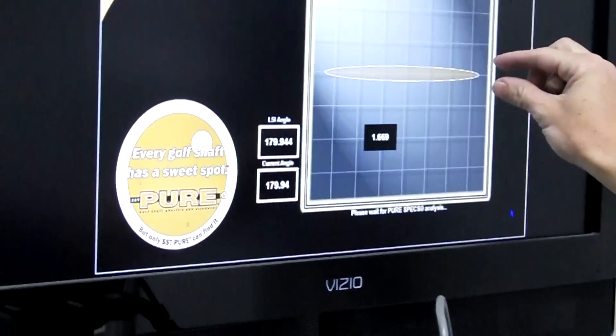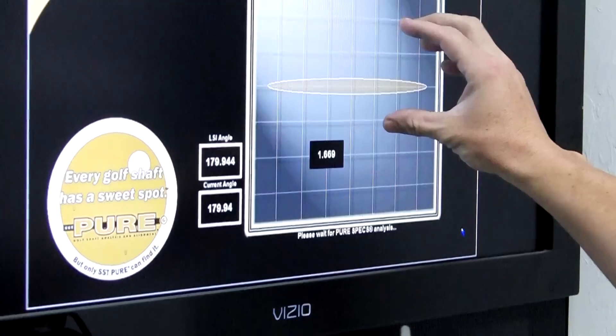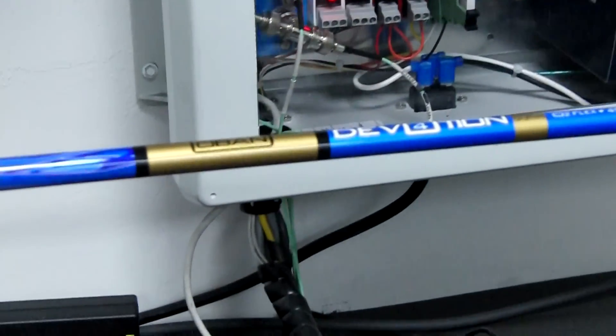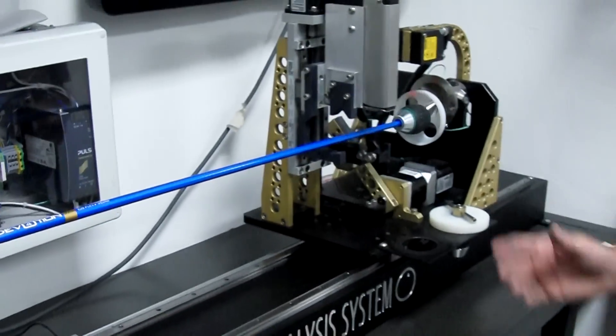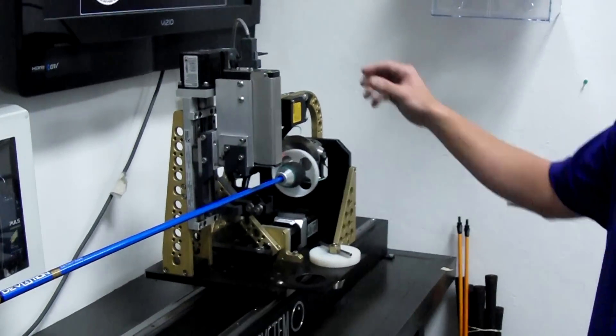So the PURE machine now is looking at making that big oscillation as small as it can make it, which would be your golf shaft flexing as straight a line as possible. It is going to rotate this in small incremental amounts.